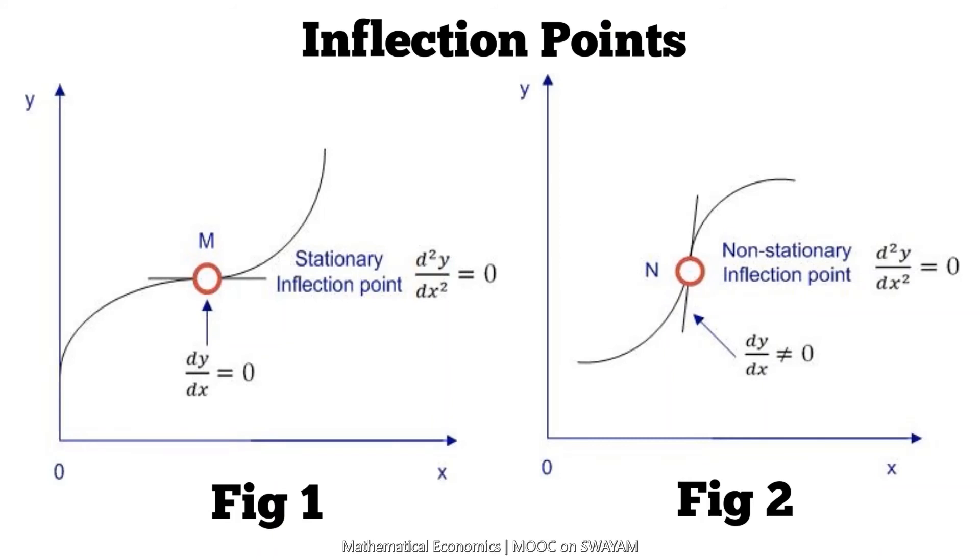In figure 2, the first derivative is not equal to 0 but the second derivative is equal to 0. Such a case is known as non-stationary inflection point.